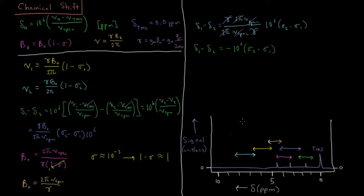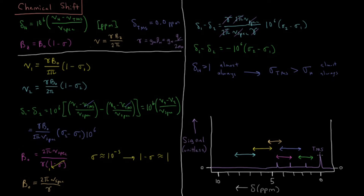Since chemical shift is almost always greater than zero in proton NMR spectra, this implies that the shielding of TMS is greater than the shielding of our given proton nucleus in almost all cases. This is another reason TMS is chosen as an excellent reference signal: it is not only highly absorbing with a strong, non-reactive signal, but it absorbs at a higher shielding and thus lower chemical shift than almost any other proton nucleus in typical organic molecules.